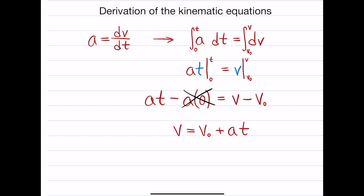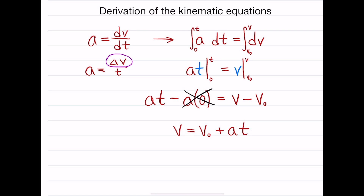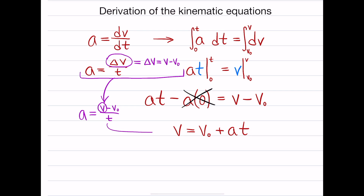We can also get this from the more algebra-based definition, which says that acceleration is equal to the change in velocity over the change in time — average acceleration. We don't often write the change in time explicitly because we usually assume it starts at the beginning of the time period. Plus, delta anything is final minus initial. So using algebra and substituting, if acceleration equals final minus initial over time, we can still solve for final velocity and get the same result. That's how you derive the first kinematic equation.